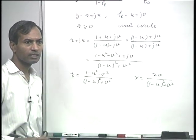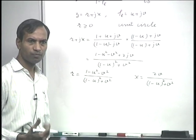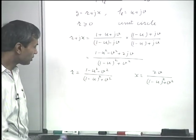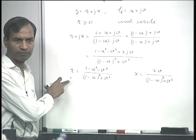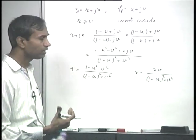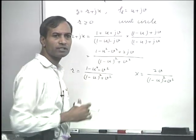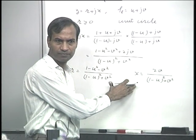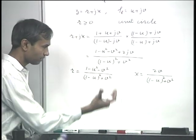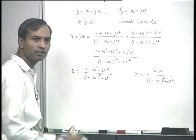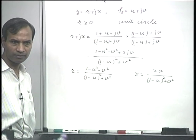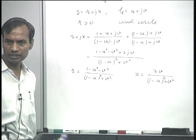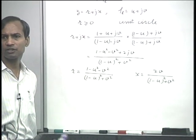We pose the question: what is the locus of points in the complex reflection coefficient plane that have a constant value of resistance, and similarly, what is the locus of points with constant reactance? This can be seen by manipulating these mathematical expressions — taking U and V terms to one side and putting them in the form of perfect squares — to identify what locus such points form.